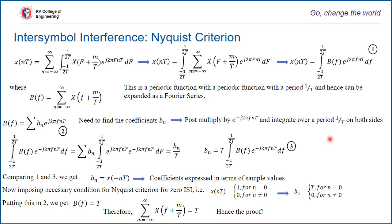That completes the Nyquist criterion for zero ISI and its analytical proof. The next video will continue further analysis of ISI — our goal being to design x(t) such that this Nyquist condition is satisfied.